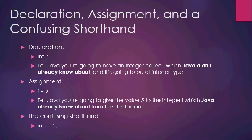An assignment is when you do 'i = 5'. What you're doing when you're assigning is you tell Java you're going to give the value 5 to the integer i, which Java already knew about from the declaration. And the confusing shorthand is that statement we use all the time and take for granted — 'int i = 5'.